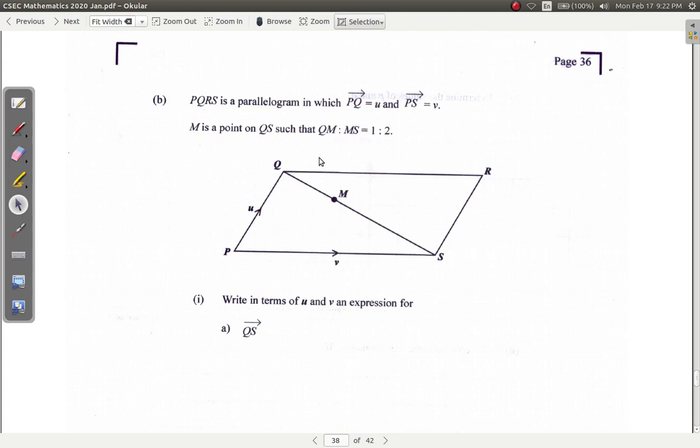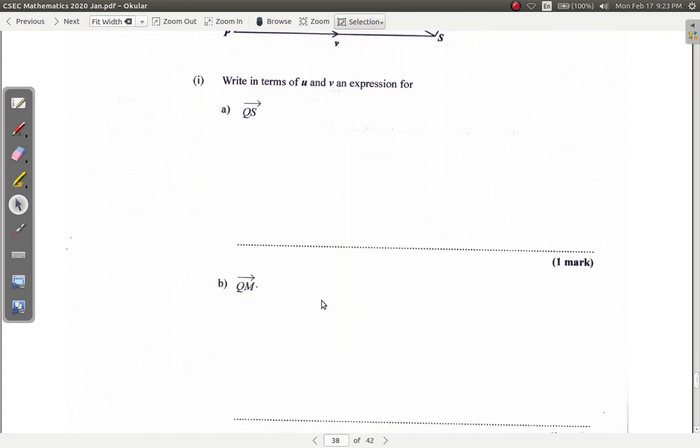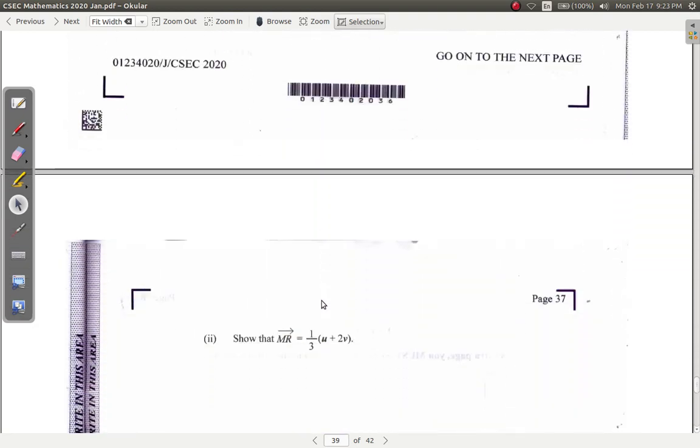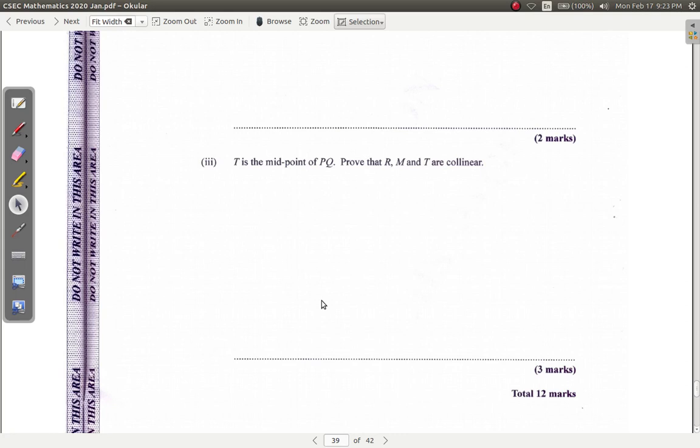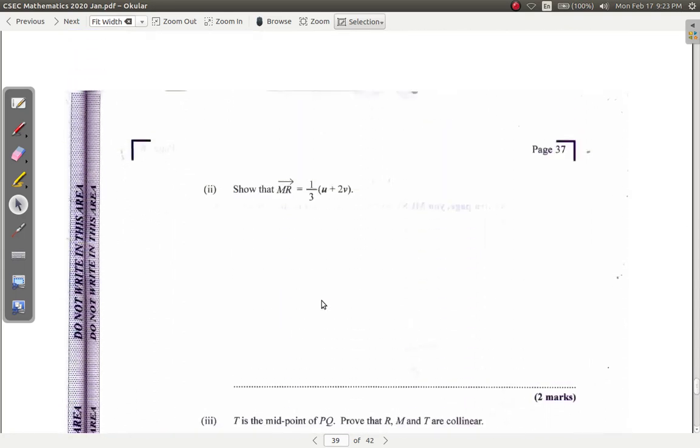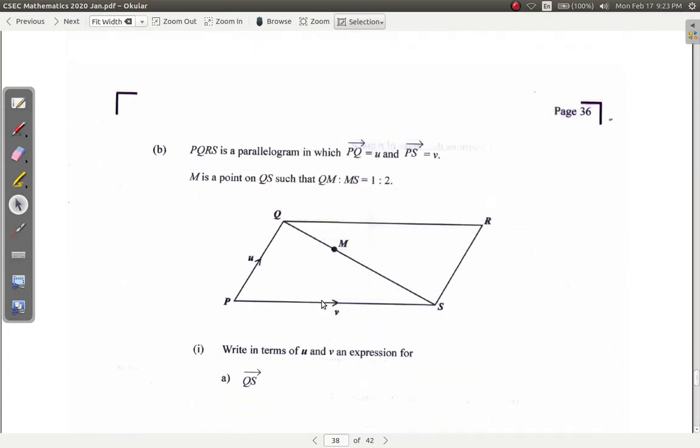PQRS is a parallelogram in which PQ is u and PS is v. M is a point on QS such that QM to MS is one to two. Write in terms of u and v an expression for QS and QM, and show that T is a midpoint on PQ. Prove that R, M, and T are collinear. So that was question 10. Let's look at what question 9 is saying.